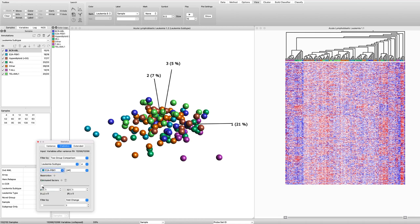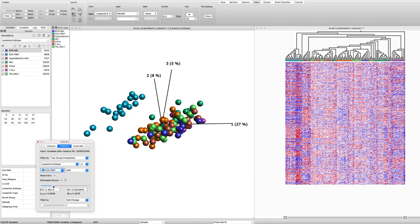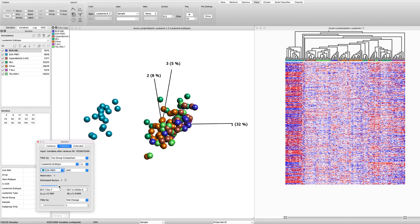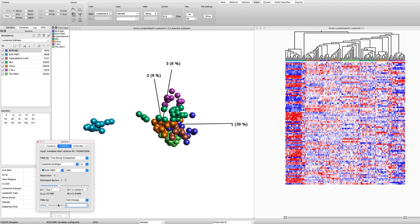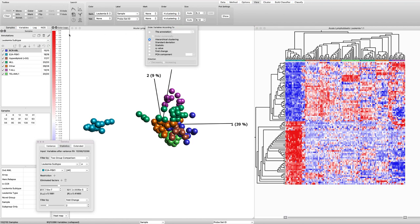The slider defines the P and Q value we require. Now we identify the variables with the lowest P and Q values by moving the P value slider, and we can also filter on fold change. Note that both plots are updated simultaneously. At this point, we have identified around 100 variables that are best at separating E2A PBX1 from the other groups.